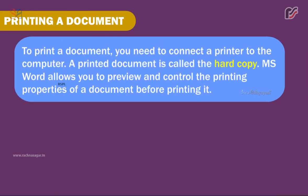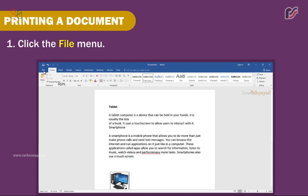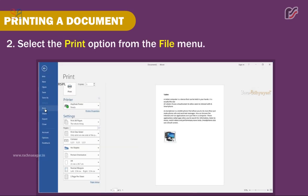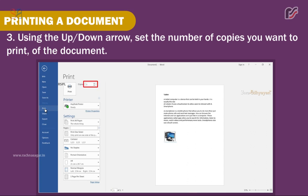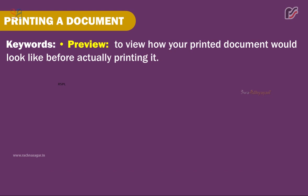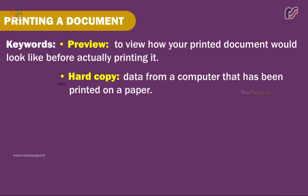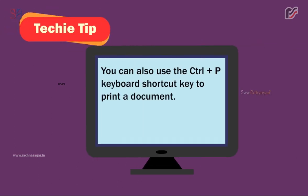Printing a document. To print a document, you need to connect a printer to the computer. A printed document is called the hard copy. MS Word allows you to preview and control the printing properties of a document before printing it. Steps to print: 1. Click the File menu. 2. Select the Print option. 3. Using the up/down arrows, set the number of copies you want to print. 4. Click the Print option to print the document. Keywords: Preview — to view how your printed document would look before actually printing it. Hard copy — data from a computer that has been printed on paper. You can also use Ctrl+P to print a document.